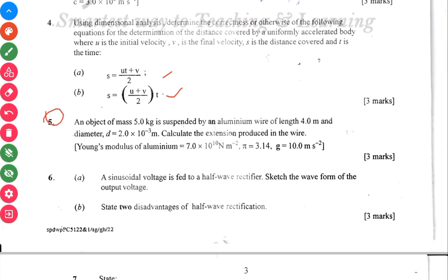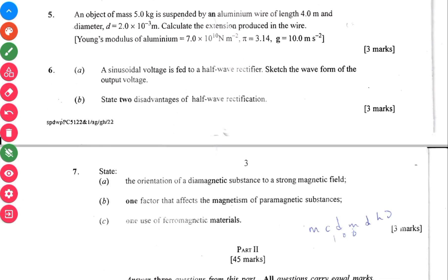Question 5 has to do with Young's modulus, stress, strain and so on. This is a topic you should always expect in any WASSCE physics paper. Question 6, the B says state two disadvantages of half-wave rectification.